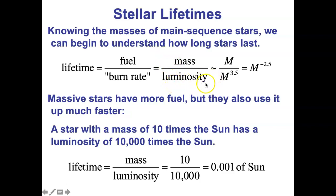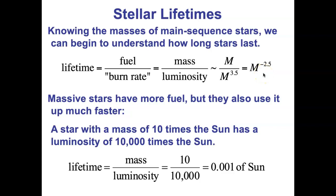For main sequence stars, luminosity depends on mass to the 3.5 power. So the lifetime is mass divided by mass to the 3.5, which simplifies to: the lifetime of a star is proportional to mass to the negative 2.5 power. The negative exponent means the more massive the star is, the shorter its lifetime.